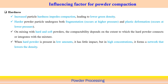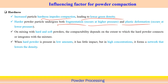Increased particle hardness impairs compaction — too hard particles actually impair the compaction, leading to lower green density. High hardness particles are very difficult to compact, which reduces the green density. Harder particles undergo more fragmentation and also exhibit high plastic deformation with application of pressure.